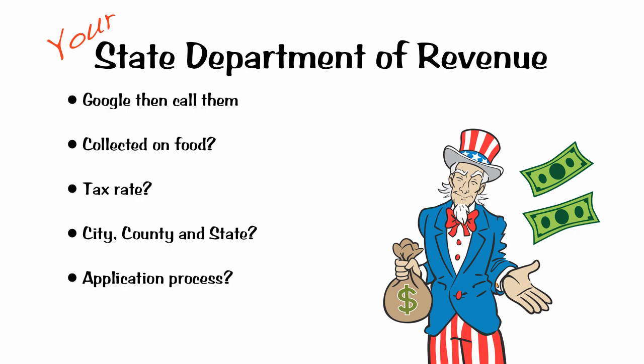As for the application process, some states do it online and it's very easy. Some require you to print off a form or request one, or you can go down to the local county office and they'll give you a form. It's usually simple and doesn't require a lot of thought. They're usually more than happy to sign you up because it means you're going to be sending them money — and you're collecting it for them as well.